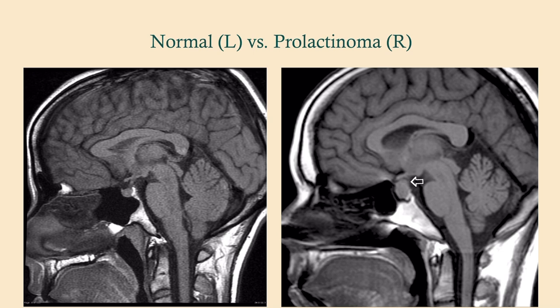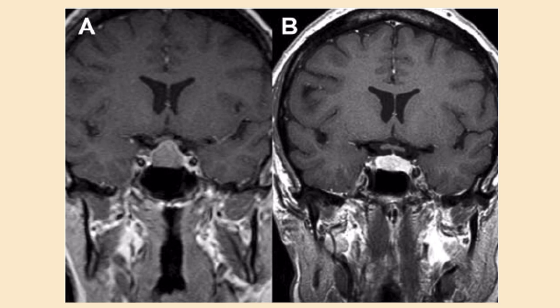This MRI shows a normal pituitary on the left and a prolactinoma on the right. Notice that the prolactinoma protrudes upward and is very close to the optic chiasm, whereas normally the optic chiasm is far from the pituitary. In the second image, the prolactinoma is clearly impinging on the optic chiasm. After treatment with cabergoline in the same patient, the adenoma has shrunk and the optic chiasm is no longer compressed.